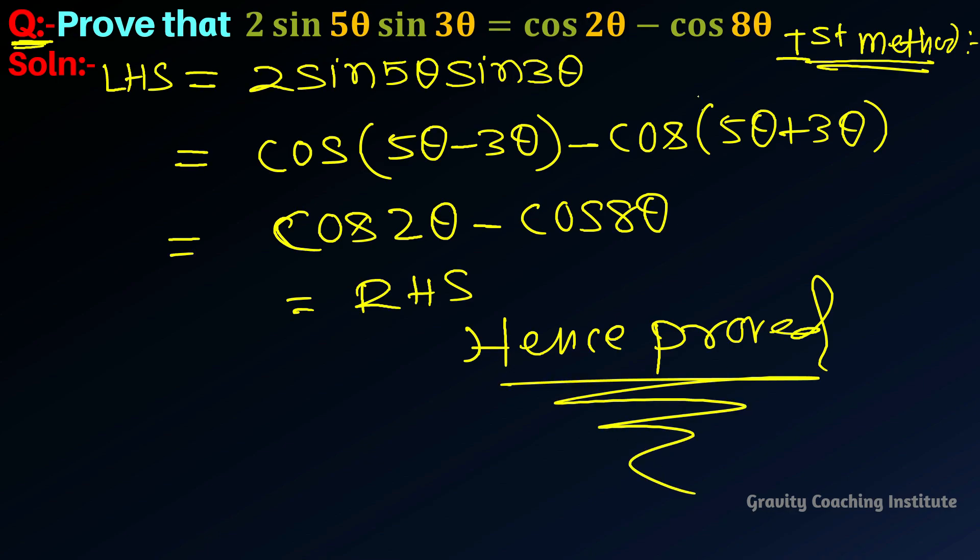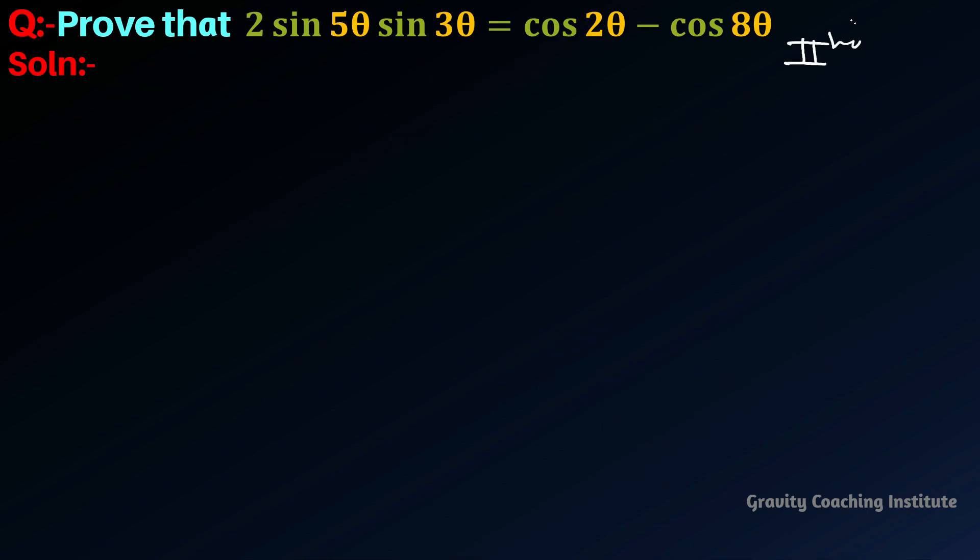Second method: In this, we'll prove from right-hand side to left-hand side. RHS = cos 2θ - cos 8θ.